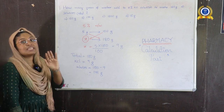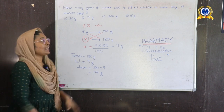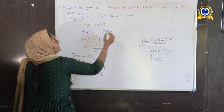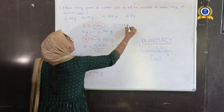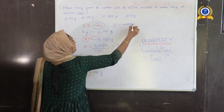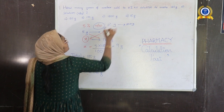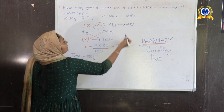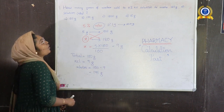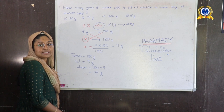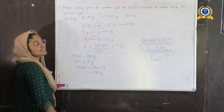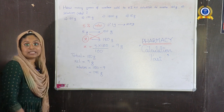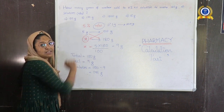Whenever you see a percentage weight by weight, that means grams per 100 grams. So 1% weight by weight means 1 gram in 100 grams. The percentage of KCl is 5%, so 5% weight by weight means 5 grams in 100 grams.